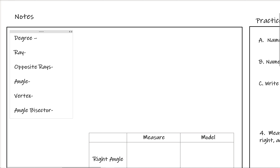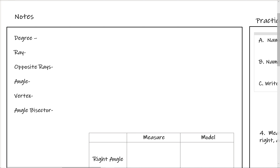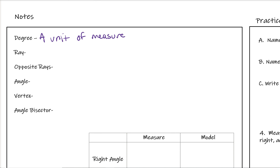The first definition is degree. A degree, which you might have heard as a measurement of temperature, is also a measurement for angles. It determines how narrow or wide an angle is — it's just a unit of measure for an angle.